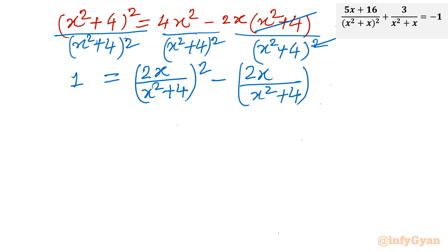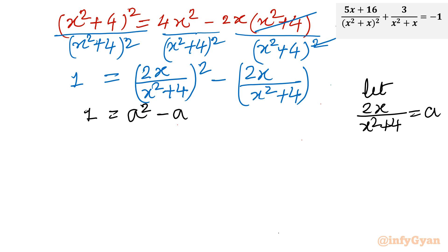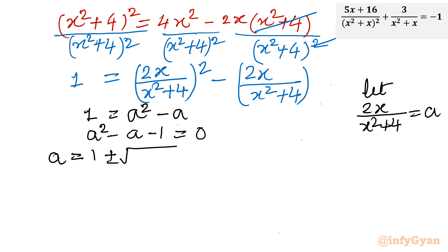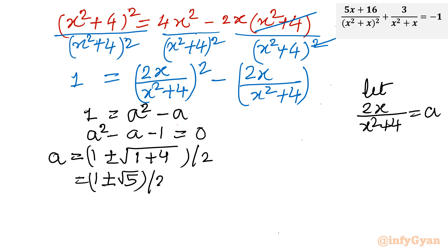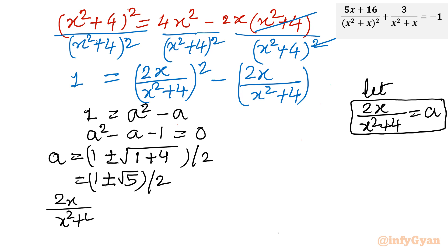Let me substitute a = 2x/(x² + 4). The equation becomes 1 = a² − a, or a² − a − 1 = 0. Applying the Sridharacharya (quadratic) formula: a = (1 ± √5) / 2.